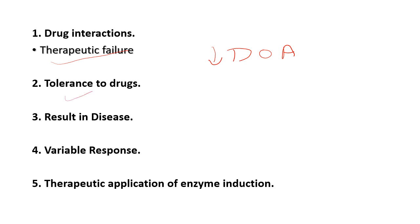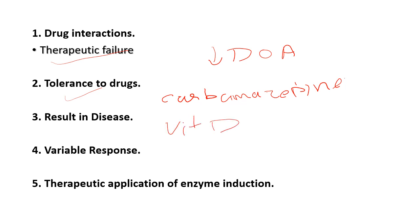Next is tolerance to drug — example is carbamazepine. Third is result in disease: anti-epileptics enhance the breakdown of vitamin D, resulting in osteomalacia on long-term administration. Fourth is variable response: in chronic smokers and alcoholics, enzyme induction fails to achieve the expected response.